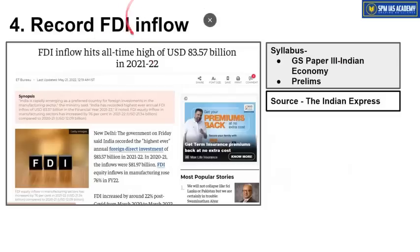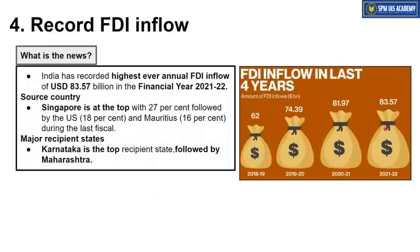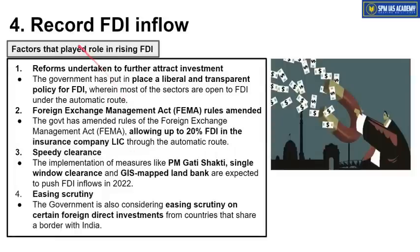The next article is about record FDI inflow in India, important for GS Paper 3 Indian Economy. In the fiscal year 2021-22, India received 83.57 billion dollars of FDI, which is the highest ever received by India in any fiscal year. Singapore is the topmost contributor with 27% of overall FDI inflow, followed by the US and then Mauritius. Statewise, Karnataka is the top recipient followed by Maharashtra. Sectorwise, the computer and computer hardware sector is the highest receiver of FDI inflow.